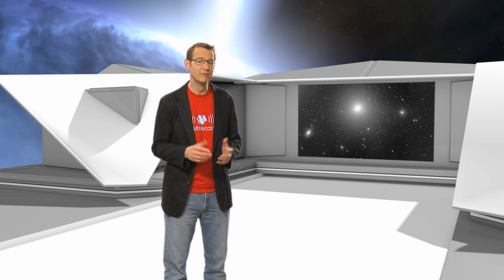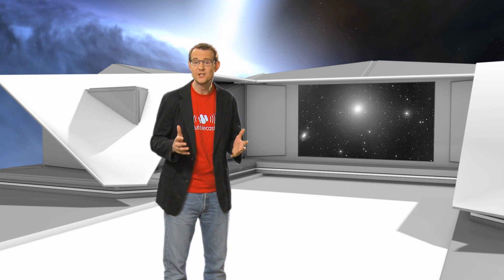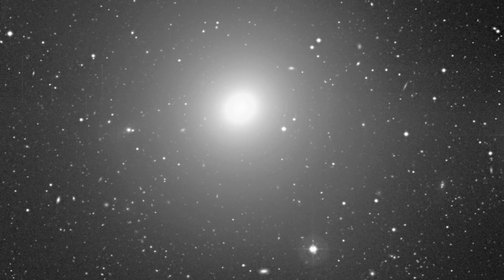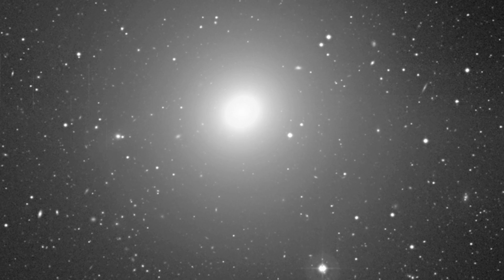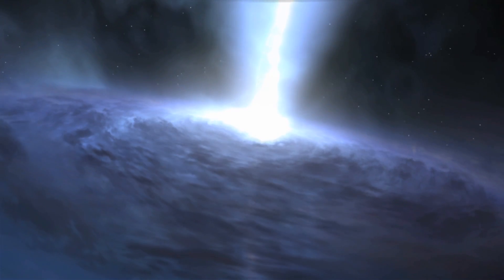Before Hubble was launched, astronomers had noticed that the centers of many galaxies were somehow much denser and brighter than they were expected to be. And so they speculated that there must be some kind of huge, massive object lurking in the centers of these galaxies in order to provide the additional gravitational attraction. Could these objects be supermassive black holes?